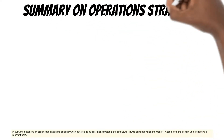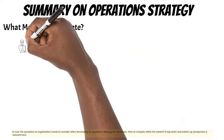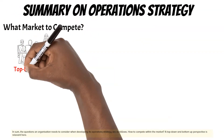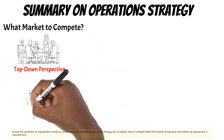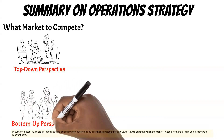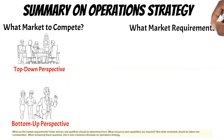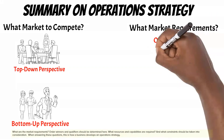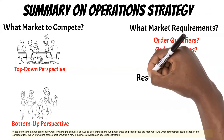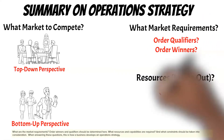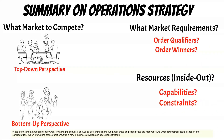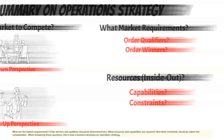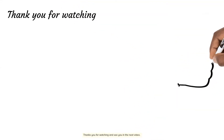In sum, the questions an organization needs to consider when developing its operations strategy are: How to compete within the market? — a top-down and bottom-up perspective is relevant here. What are the market requirements? — order winners and qualifiers should be determined here. What resources and capabilities are required, and what constraints should be taken into consideration? When answering these questions, this is how a business develops an operation strategy. Thank you for watching and see you in the next video.